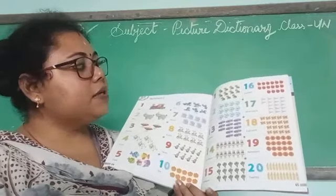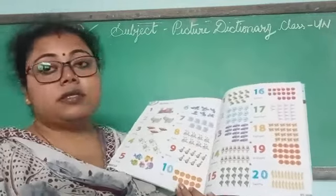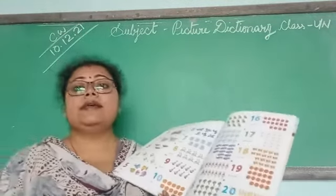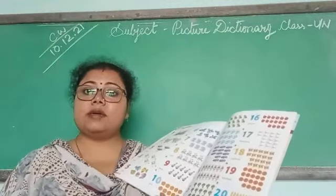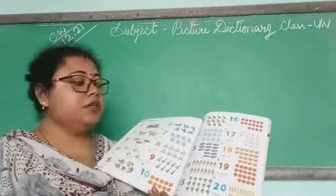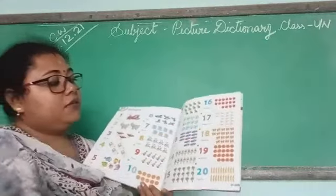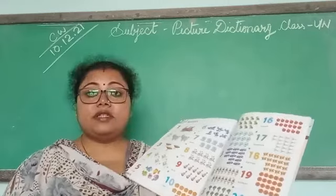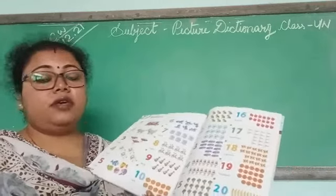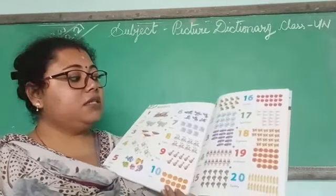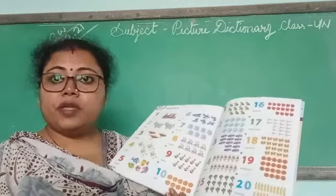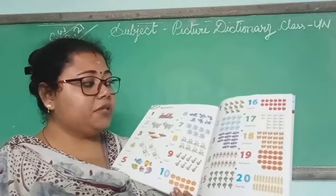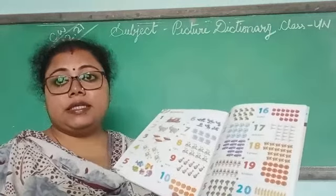Next, see — apples. How many are there? Sixteen. What is the spelling of sixteen? S-I-X-T-E-E-N, 16. Then, there are scissors. How many scissors are there? Seventeen. S-E-V-E-N-T-E-E-N, 17. Then, see — butterflies. How many butterflies are there? Eighteen.